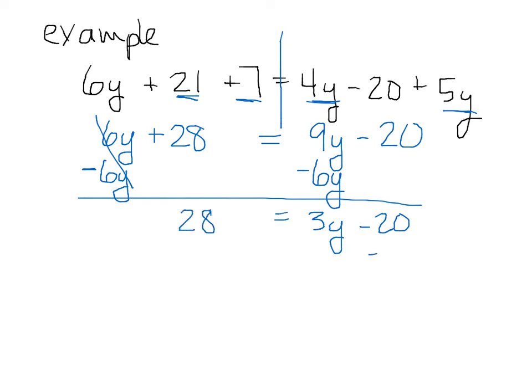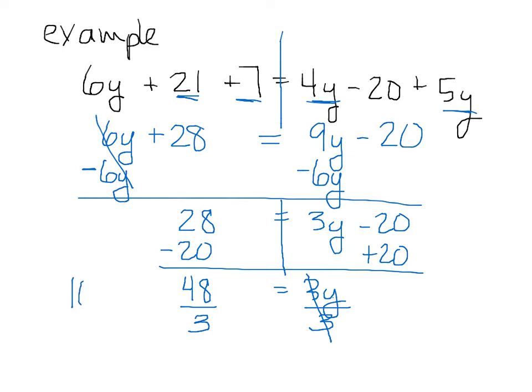Okay, now I want to move the constants to the other. Opposite of minus 20 is plus 20. 48 equals 3y. I have constants on one side, the left side, and variables on the right side. I need to get the variable by itself. The opposite of 3 times y is divide. 48 divide by 3. 3 goes into 4 once. 18. I have an answer.